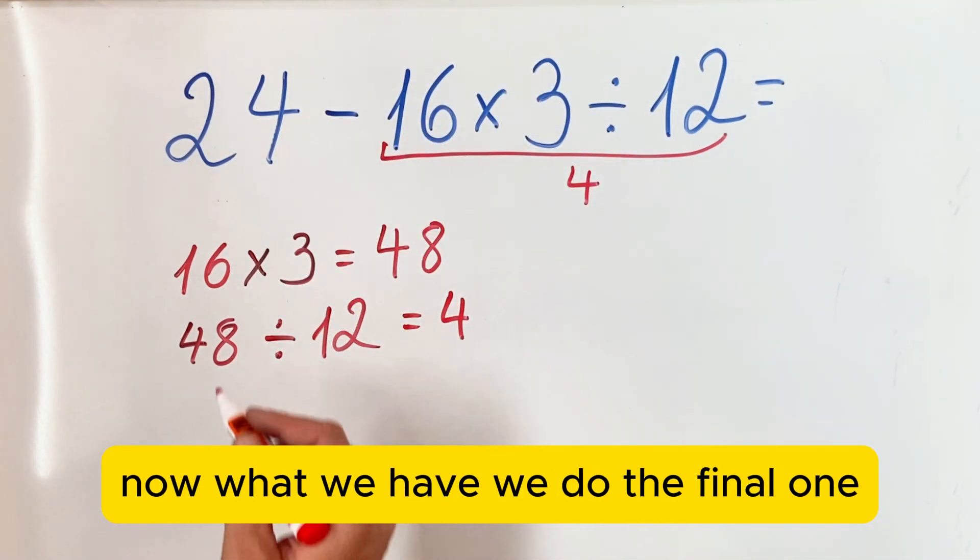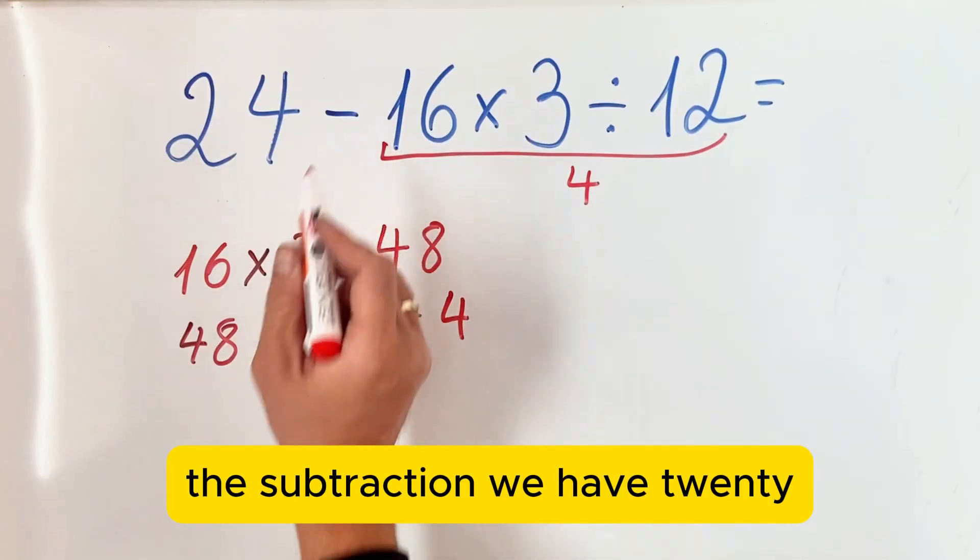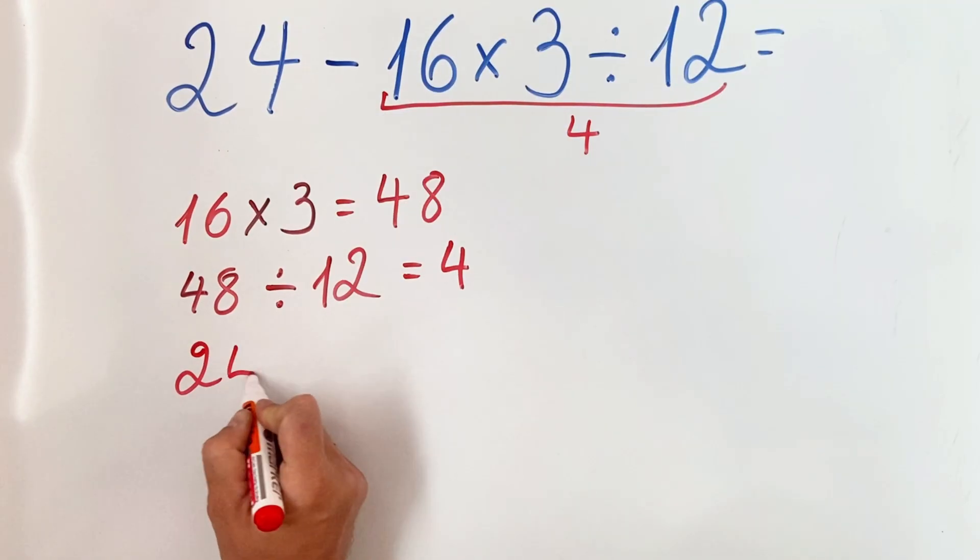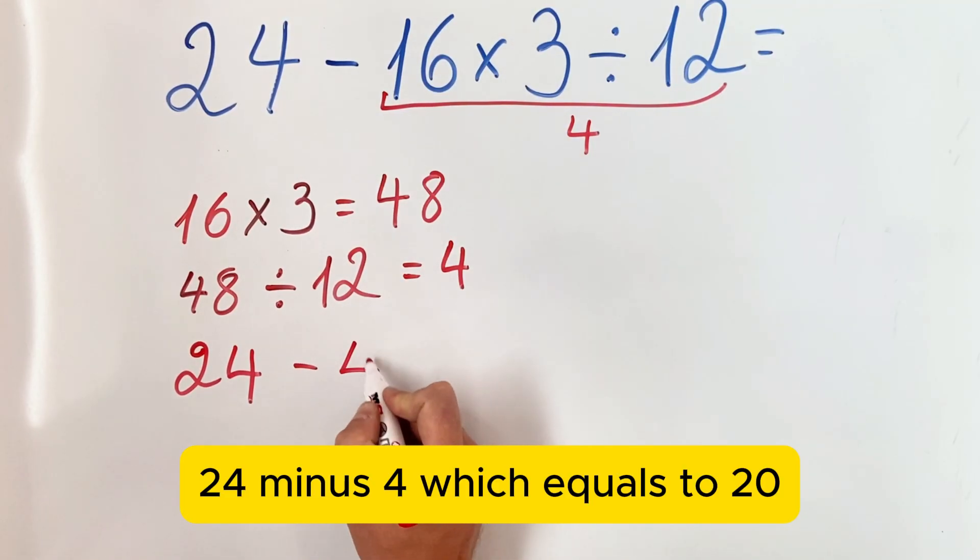Now what we have, we do the final one - the subtraction. We have 24 minus 4, which equals 20.